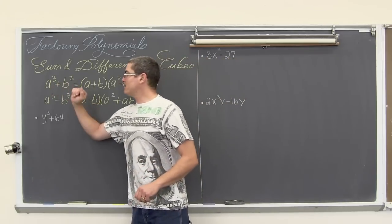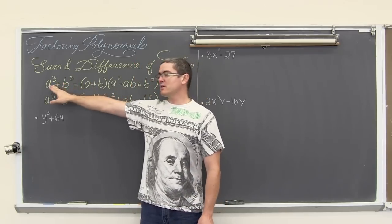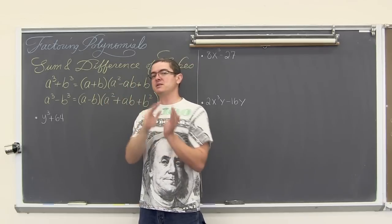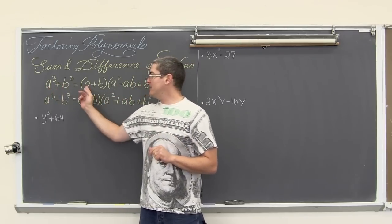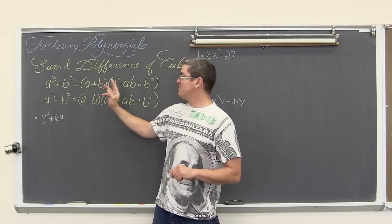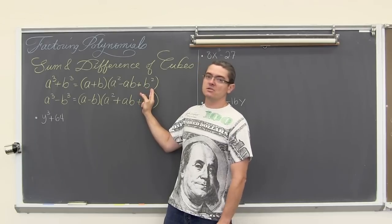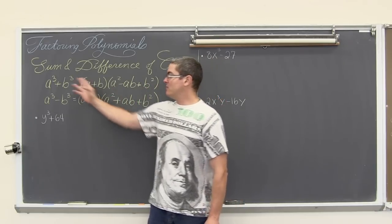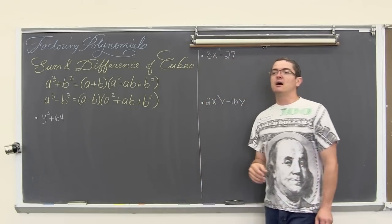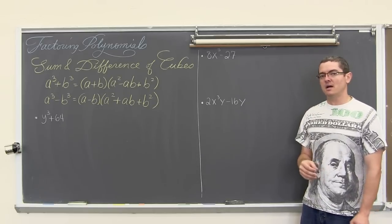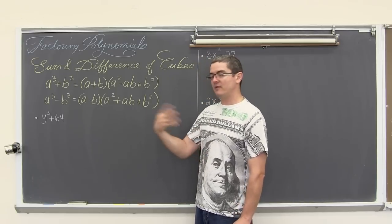So we have a cubed plus b cubed. We are going to cube root the first and second term as a whole — the numbers and letters all together — identify a and b, and put it into this pattern: a plus b times a squared minus ab plus b squared. Just plug it right into that pattern. If you don't know these patterns for factoring the sum and difference of cubes, you could have a very hard time. You really just want to know these formulas.